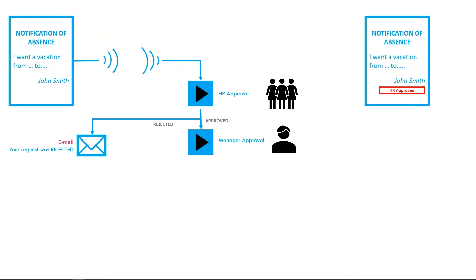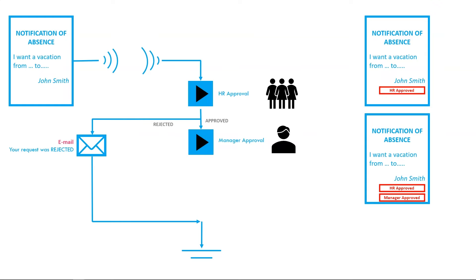In case of rejection, an email is sent to the employee with information that the request was rejected. The manager then decides whether to approve or reject the notification of absence. If the manager clicks 'I approve,' the employee is notified by email that they can go on their dream vacation. In the case of rejection, an email about rejection is sent to the employee.